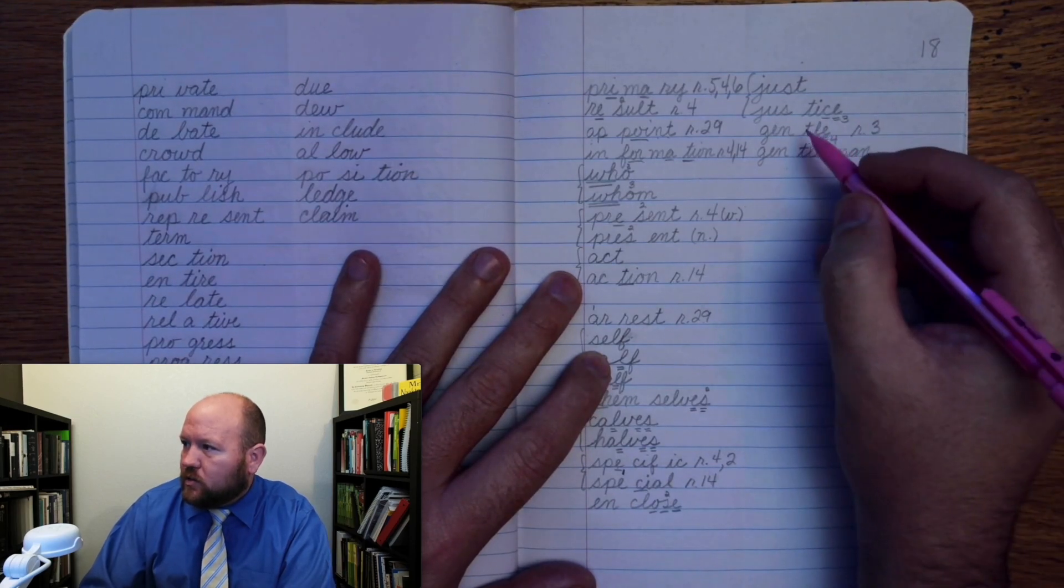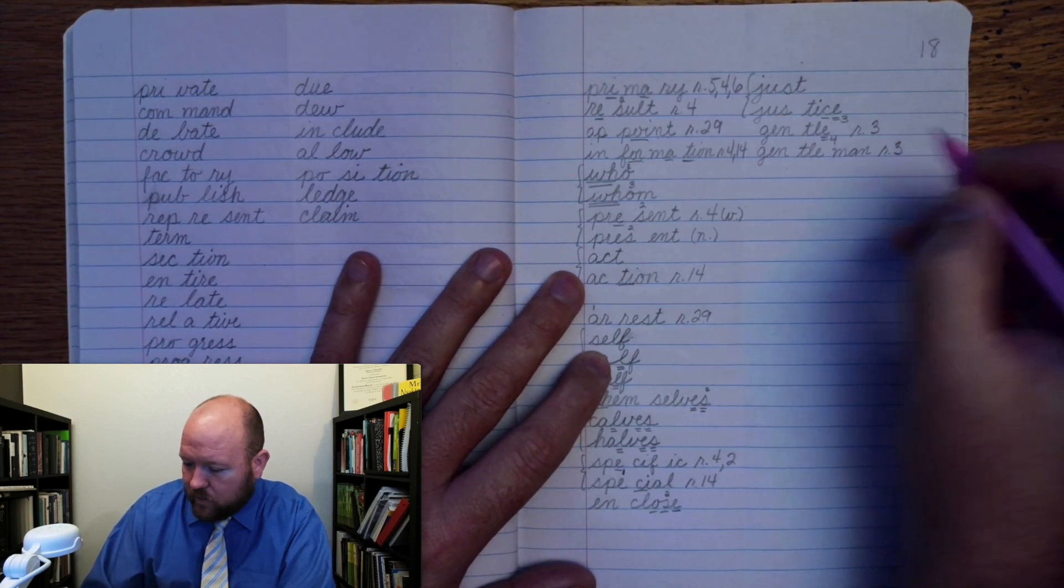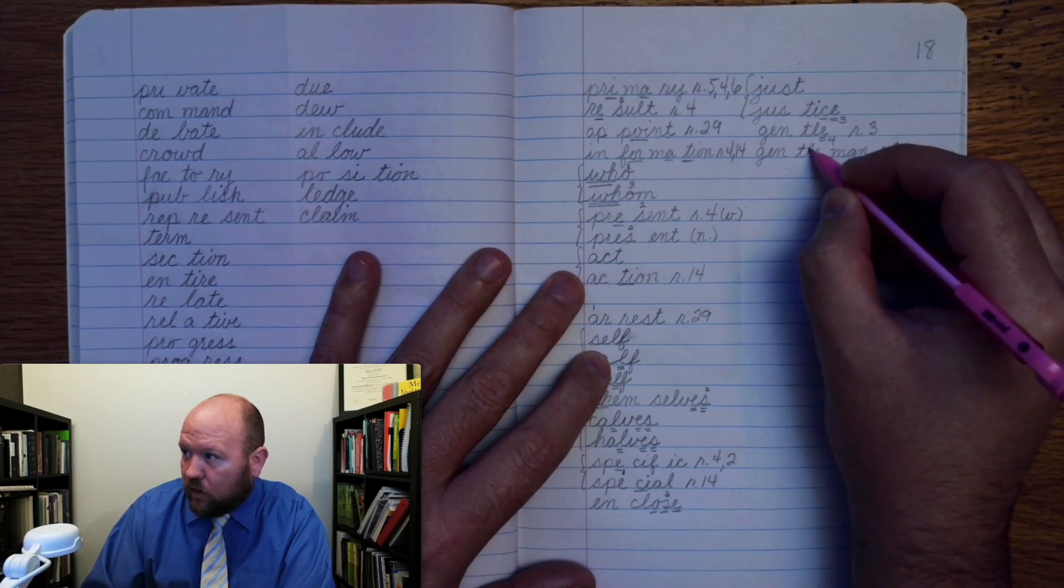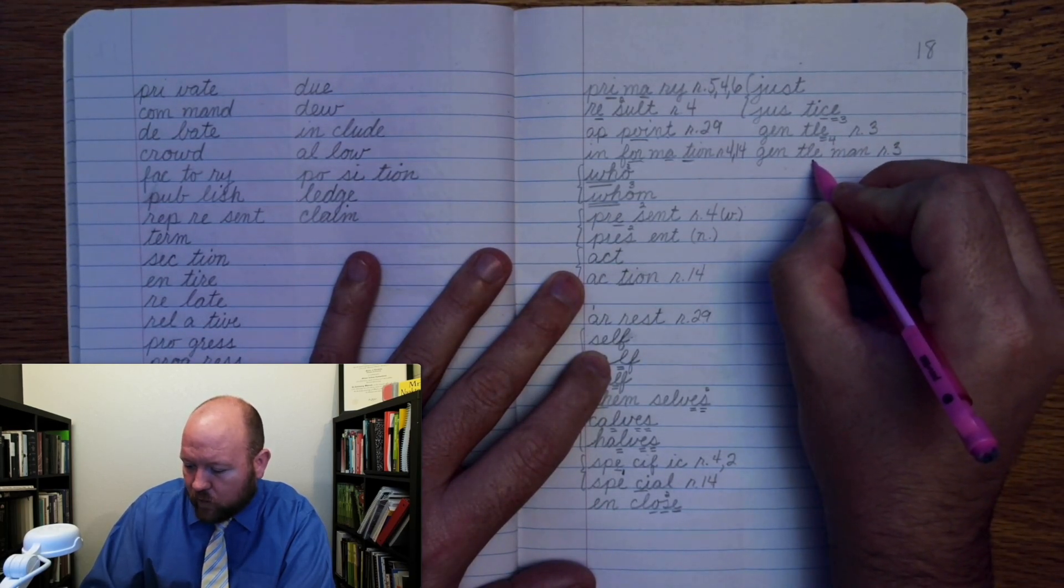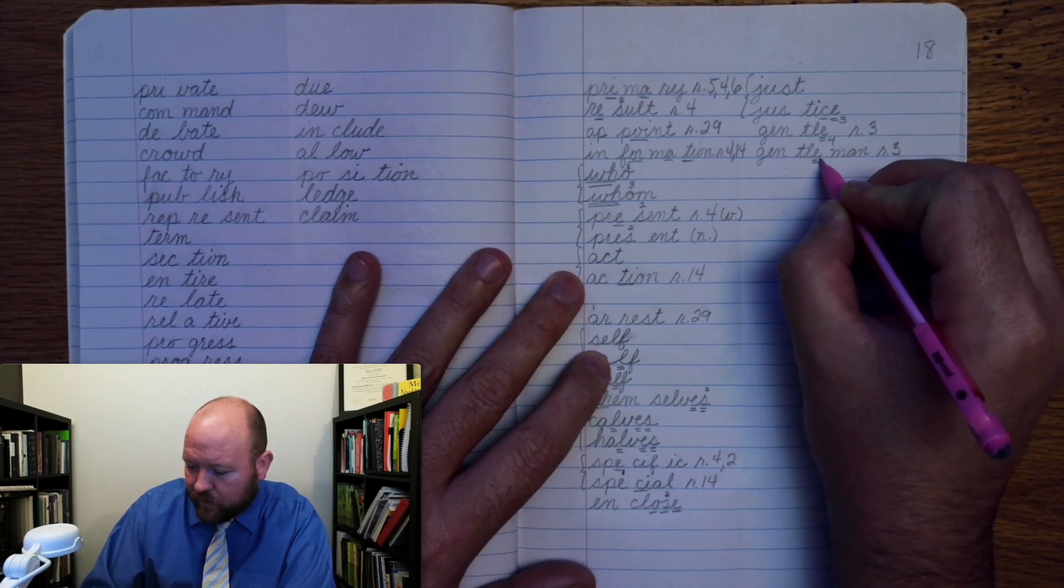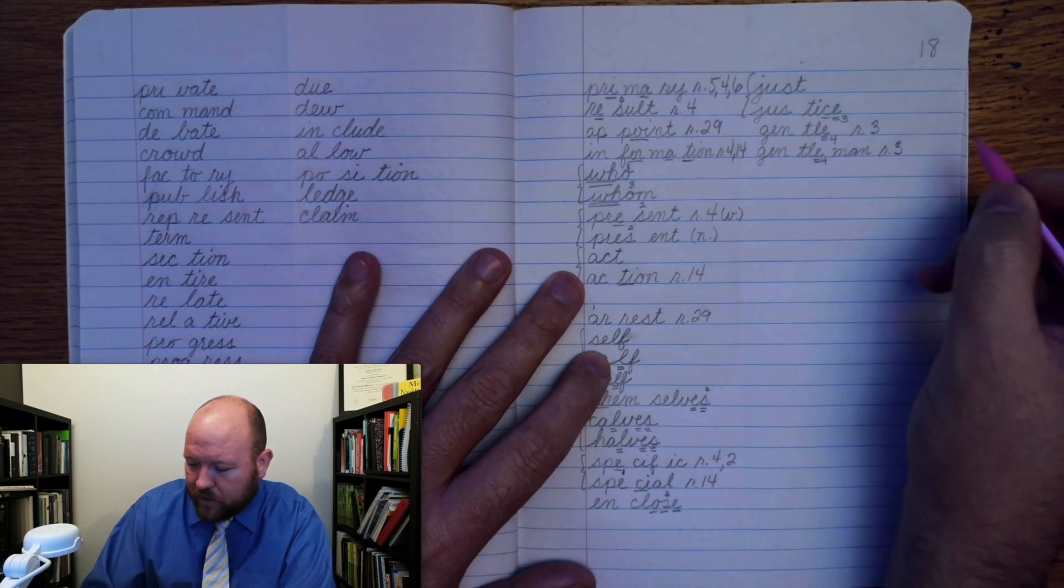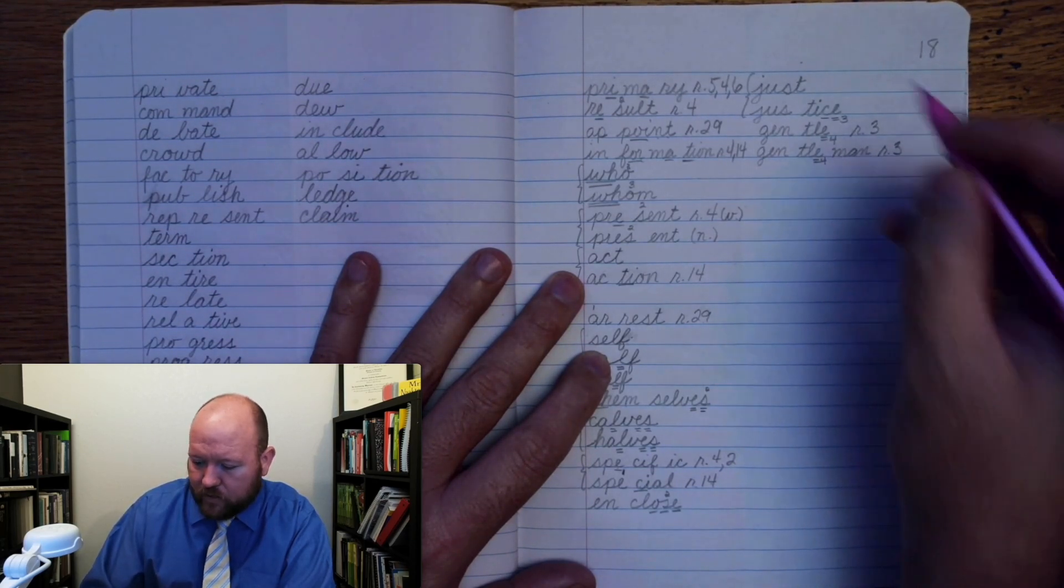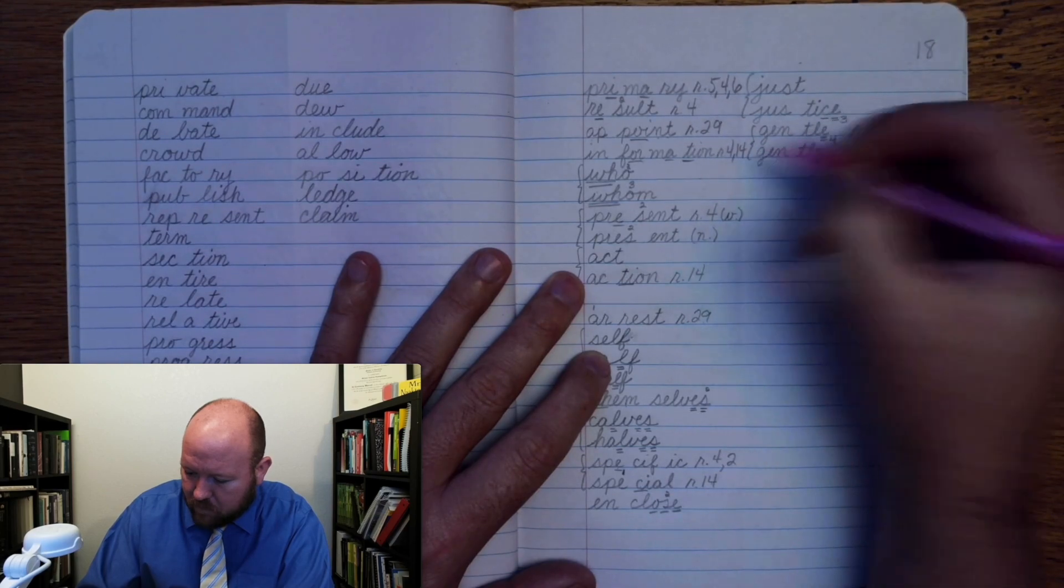Gen-tle-man. Markings: J, rule three. E-N-T-L-E. Now even though it's not at the end of the word anymore, we're still going to treat it as a final E because it was in the base word. M-A-N. Gentleman. Brace those two.